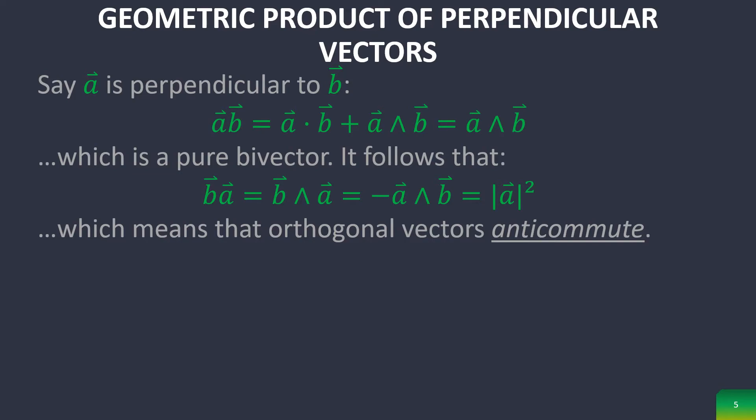The geometric product of a perpendicular vector is opposite. If they're perpendicular, then they're going to have no contributions for the scalar product, and so they're only going to give bivectors. Right here, you can represent it. This creates an oriented plane.